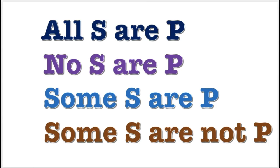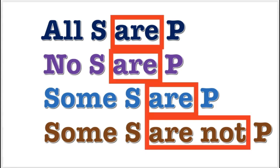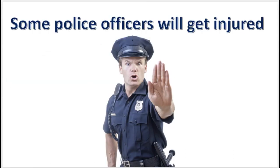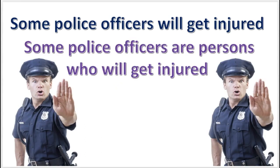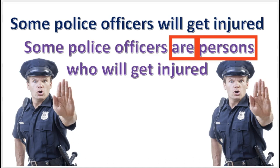The next case concerns categorical propositions that are missing standard copulas. For example, in the proposition 'some police officers will get injured,' the word 'will' is not a proper copula. We need to reword this proposition to read 'some police officers are persons who will get injured.' Now it has a proper copula and a plural noun in the predicate.